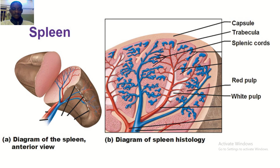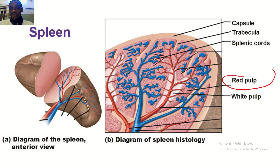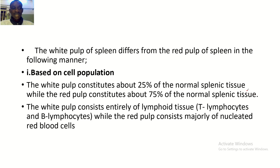This is a spleen that has been cut into two, and I'm coming to the histological diagram of the spleen. I would like you to note where the red pulp is and where the white pulp is, because those two are what we'll be comparing and differentiating.